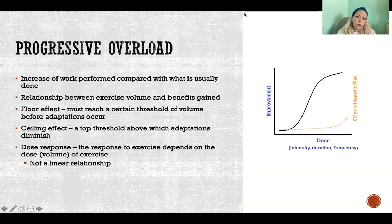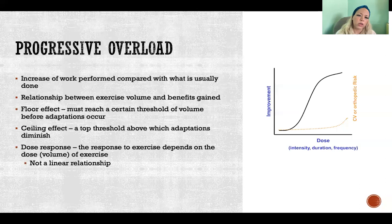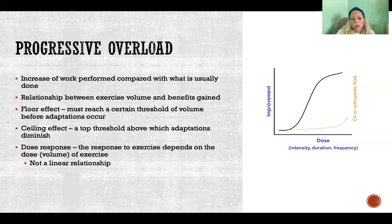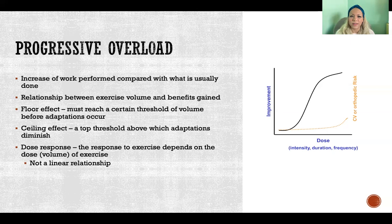Progressive overload is the increase of work performed compared with what is usually done. We want to progressively — meaning gradually — work on overloading our muscles or cardiovascular system. Our progress depends on asking the body to do more than it could before. If we just keep doing the same thing we can already do, we're not asking the body to adapt, improve, or do anything it couldn't already do.